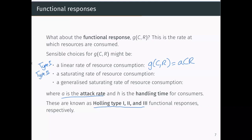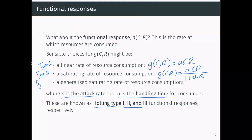Type two is where we have a saturating rate of resource consumption. We still have an attack rate A and our C times R giving us our rate of consumers coming into contact with resources, but we're going to divide this by one plus AHR, where H is handling time. This is telling us that consumers can't just keep eating resources indefinitely — if there are lots of resources around, it reduces the rate at which they can be consumed. Essentially, predators, for example, need time once they've killed their prey to eat that prey and digest it. They don't just immediately keep killing prey at a very fast rate. So that's a saturating function — a type two functional response.